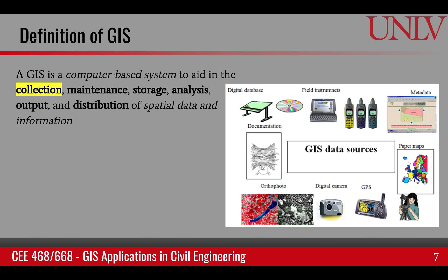GIS involves the collection of data from many sources, including digital databases — data already in computers as well as data brought in by digitizing old maps. It also includes field instruments such as GPS devices and field laptops, metadata which is data about the data, paper maps, digital cameras, and orthophotos coming from remote sensing. All of these are sources for data collection in GIS.